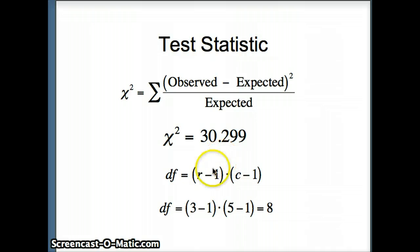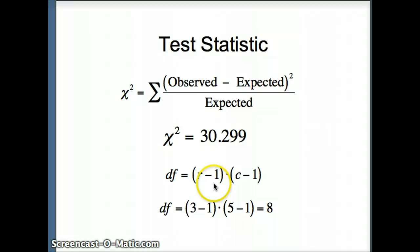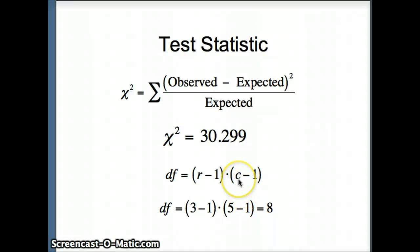We need to get our degrees of freedom. Degrees of freedom equals the number of rows minus one times the number of columns minus one. There were three rows — on campus, off campus, or with parents — so three minus one is two. There were five columns — abstain, light, light to moderate, moderate to heavy, and heavy — so five minus one is four. Two times four gives us eight degrees of freedom.